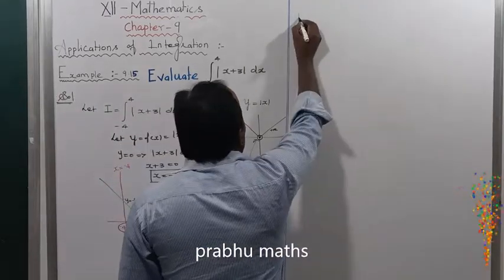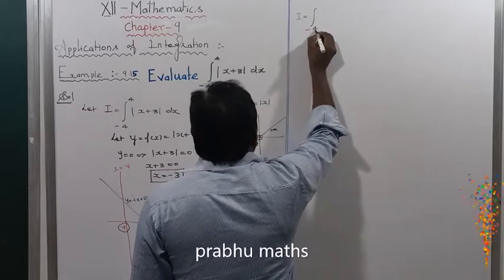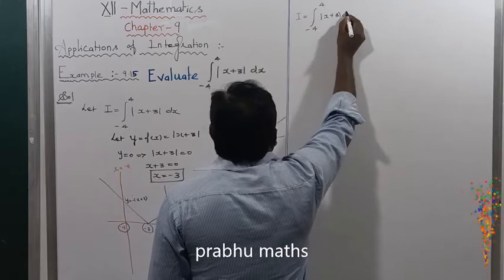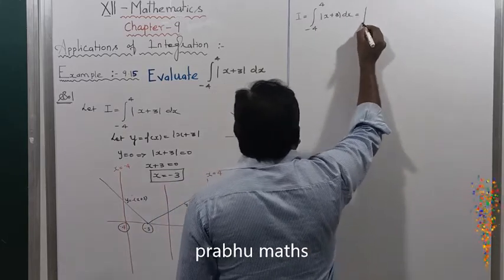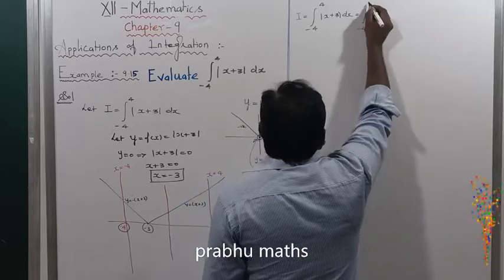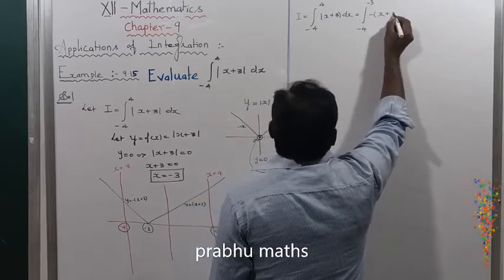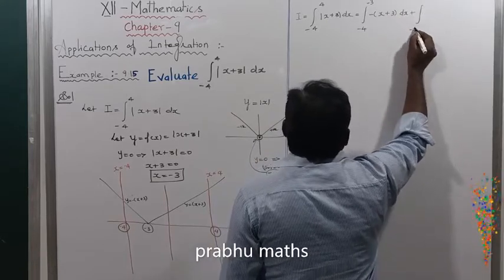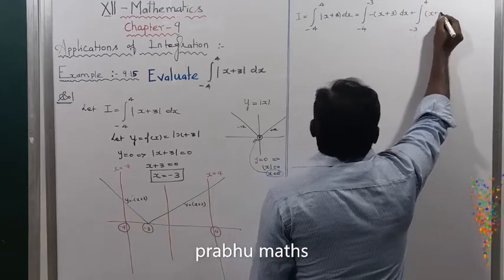So I equals the integral from minus 4 to plus 4 of modulus of x plus 3 dx, which equals the integral from minus 4 to minus 3 of minus (x plus 3) dx, plus the integral from minus 3 to plus 4 of (x plus 3) dx.